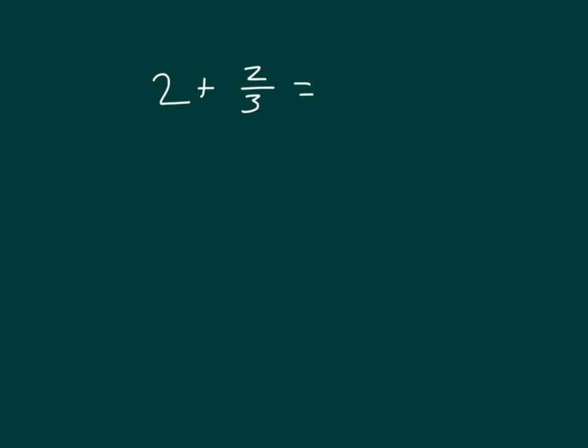Here we have 2 plus 2 thirds. How would we model this? Well, let's draw some tape diagrams here, where each of these bars represents a whole. So that we have 2 wholes, and let's separate each of those wholes, 1 whole here, and another whole here, into thirds.